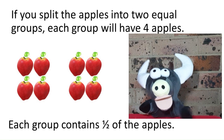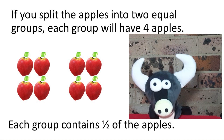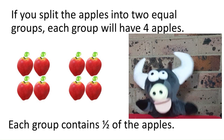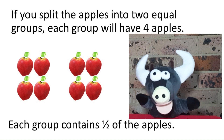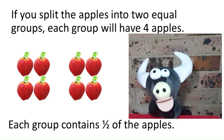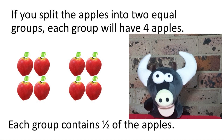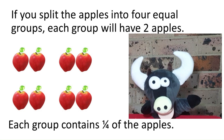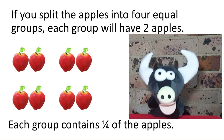Each group is called a half of the apples, together. The two halves make the whole group of eight apples. If you split the apples into four equal groups, each group will have two apples.